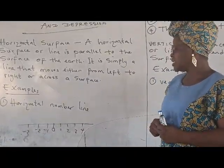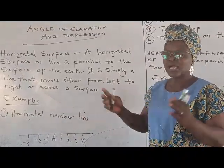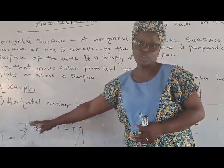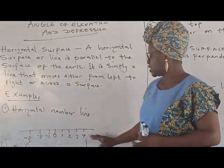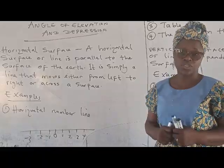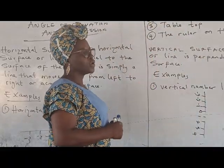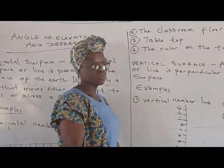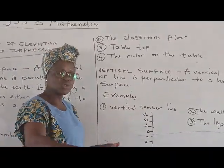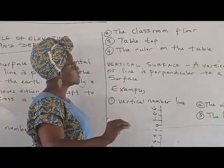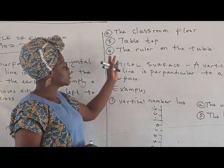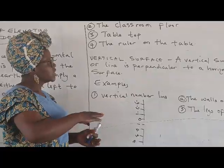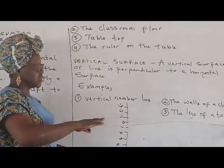The first example is a horizontal number line. A number line in this direction is parallel to the Earth surface — it is an example of a horizontal surface. The second example is the classroom floor, which is horizontal. We also have our table tops, which are also horizontal surfaces. And when you place a ruler on the table, as in example 4, it is also a good example of a horizontal surface.